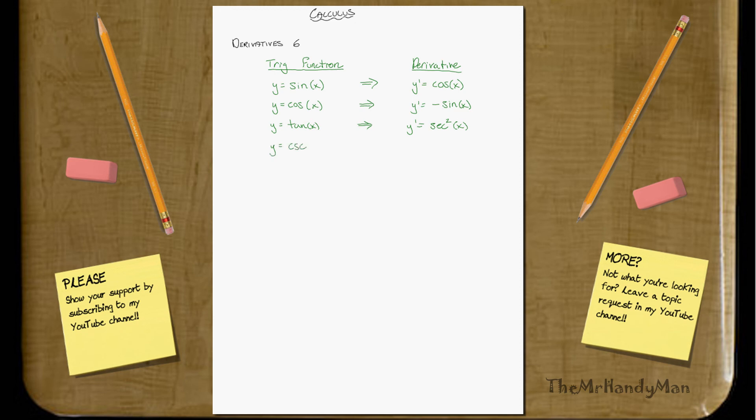y equals cosecant of x. The derivative is equal to negative cosecant of x cotangent of x.